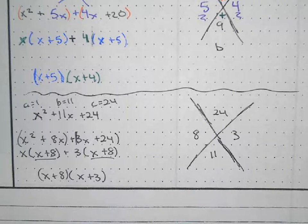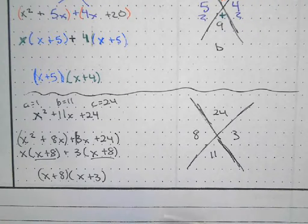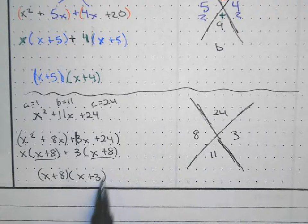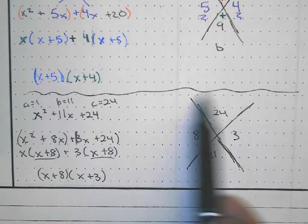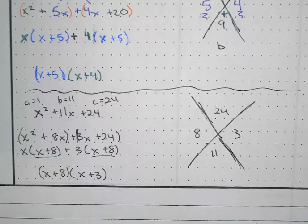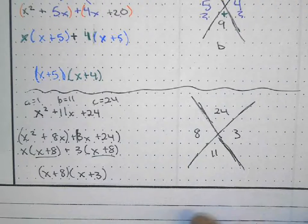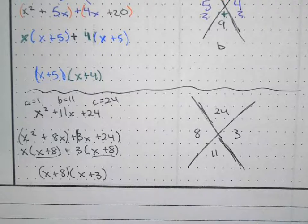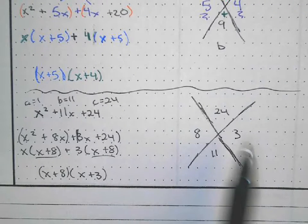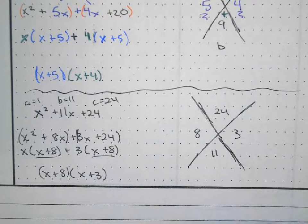The common term is x + 8, so I pull that out front and I'm left with x + 3. Final answer: (x + 8)(x + 3). That's how we use the AC method. If you see the shortcut, look at the answer versus the AC method — but remember, the shortcut only works when a equals one.